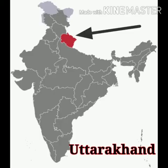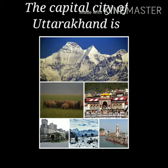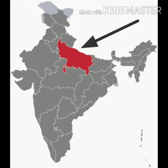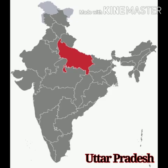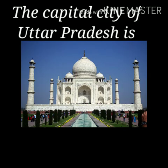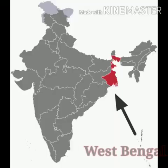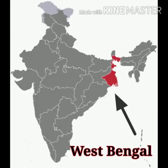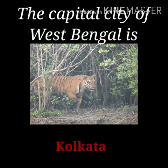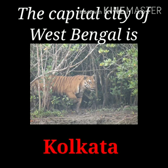Twenty-sixth is Uttarakhand. The capital of Uttarakhand is Dehradun. Twenty-seventh is Uttar Pradesh. The capital of Uttar Pradesh is Lucknow. Last, twenty-eighth is West Bengal. The capital of West Bengal is Kolkata.